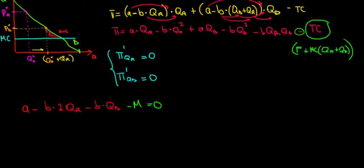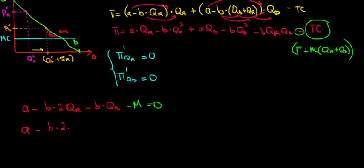Now let's take the derivative with respect to the quantity of the discount customers, qd. Going through: a times qr has nothing with qd, so that's zero. Minus b times qr squared, nothing with qd — zero. Then a times qd differentiated with respect to qd gives just a. Minus b times qd squared gives b times 2qd. And minus b times qr times qd, differentiated with respect to qd, gives b times qr — because qr is the only constant left there.